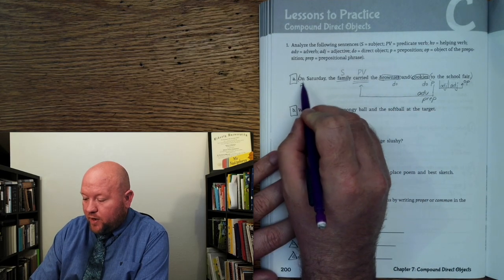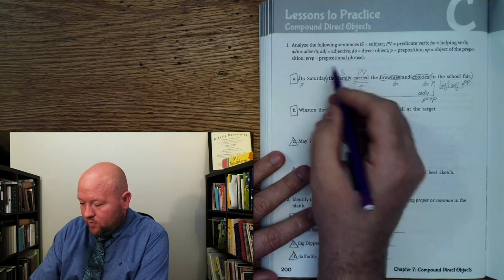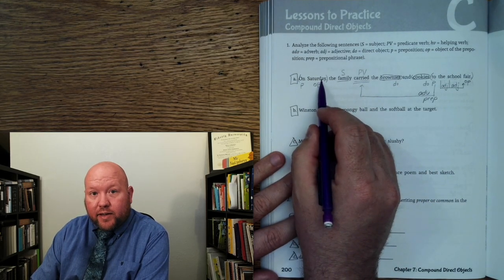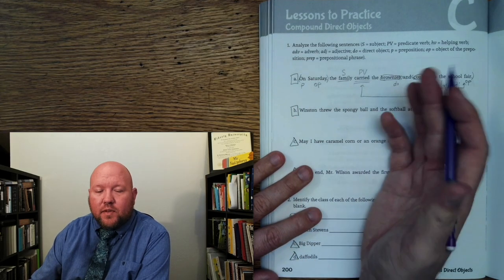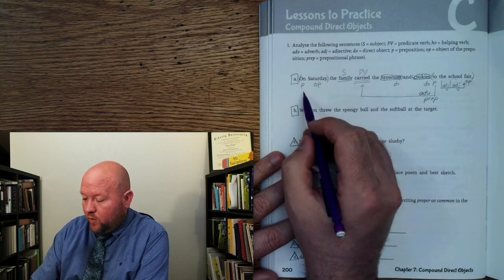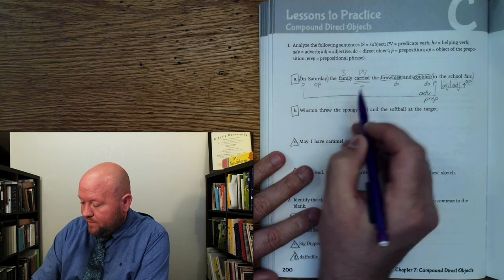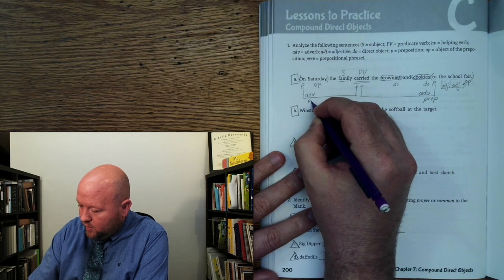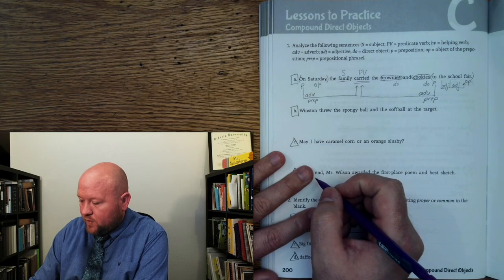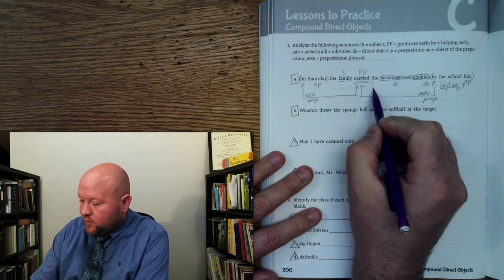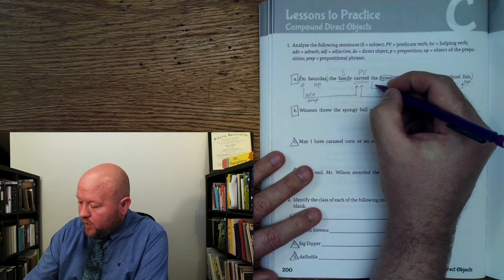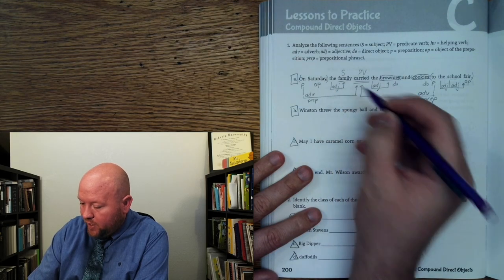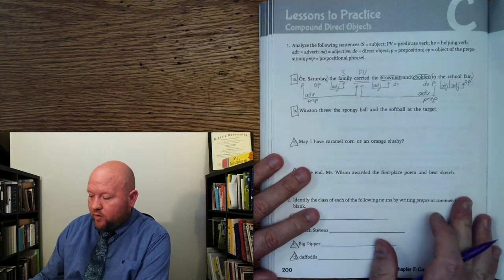Now let's do the other prepositional phrase: 'on.' On what? On Saturday. Saturday is the first noun or pronoun that follows it — object of the preposition. What is 'on Saturday' telling us? It's telling us when. What kind of word tells us when? An adverb — it tells us when they were carrying it. ADV PREP — adverbial prepositional phrase. 'The' is an article adjective, ADJ, that modifies the next noun.